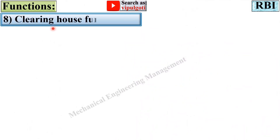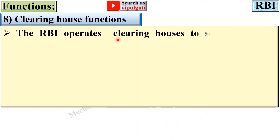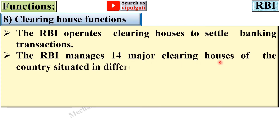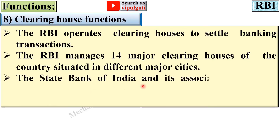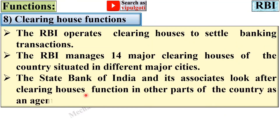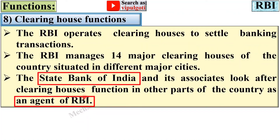The next function is clearing house functions. The RBI operates clearing houses to settle banking transactions and manages 14 major clearing houses situated in different major cities of the country. The State Bank of India and its associates look after clearing house functions in other parts of the country as an agent of RBI.